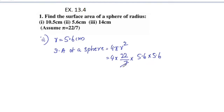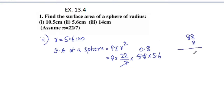We can cancel 7 with 56, giving 8. So we have 0.8 remaining. 22 into 4 is 88. 88 into 8 gives 64.